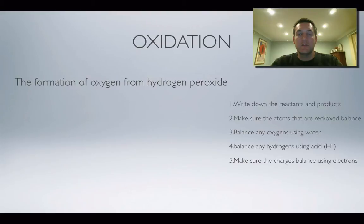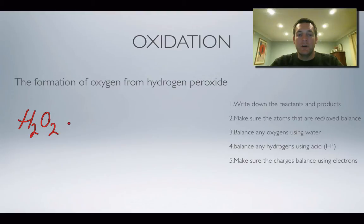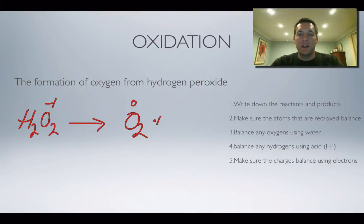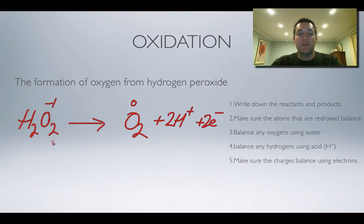Now a slightly more complex example involving a polyatomic substance: hydrogen peroxide forming oxygen. We start with H₂O₂ and end up with O₂. The atom being oxidized is oxygen — in the peroxide it's −1, and as an element it's 0. The oxygens balance with two on each side. There are two hydrogens, so we add two H⁺ ions to the right side. That gives a 2+ charge on the right, so we add two electrons to balance — giving us the half equation for a polyatomic substance.